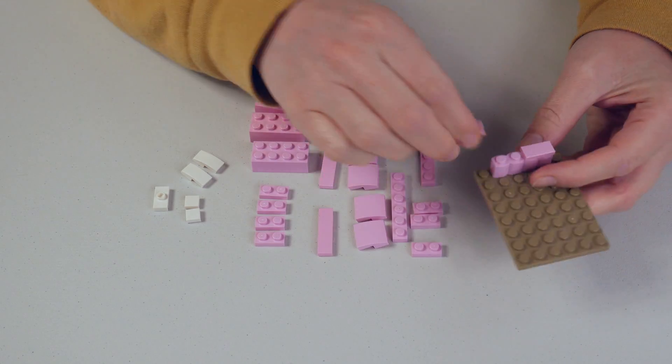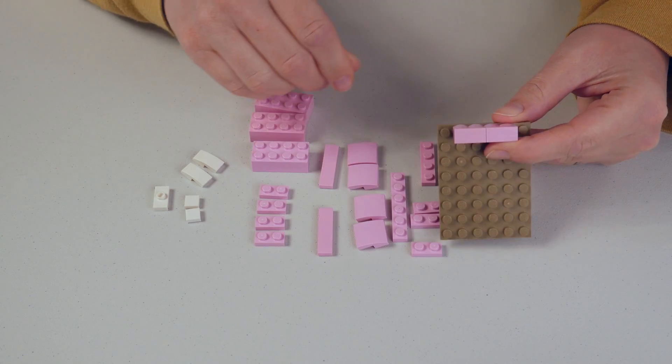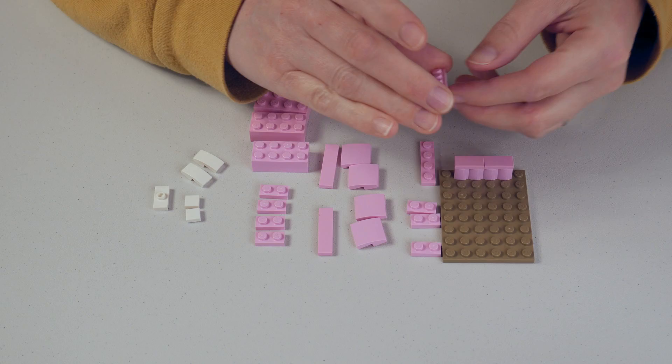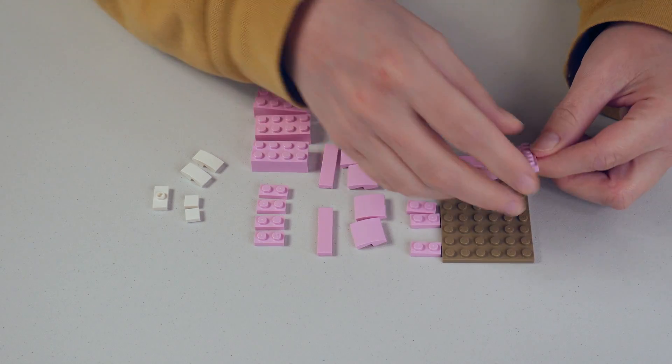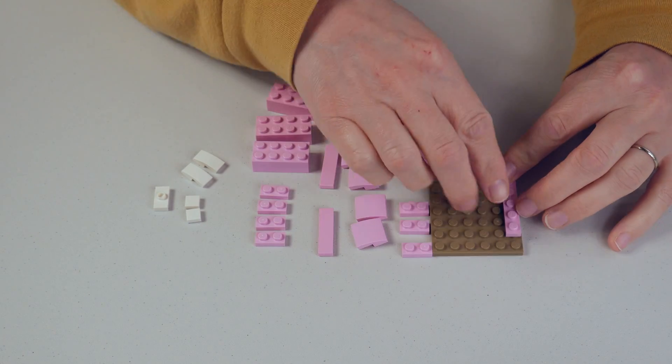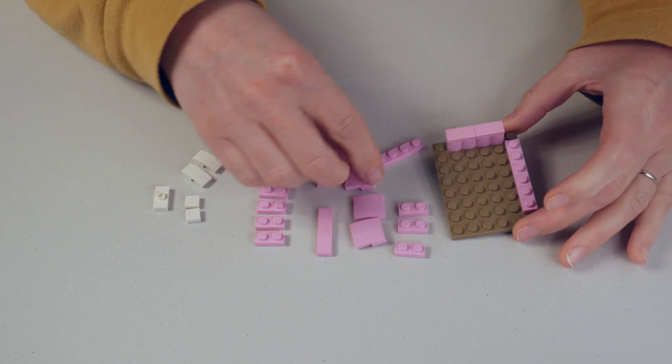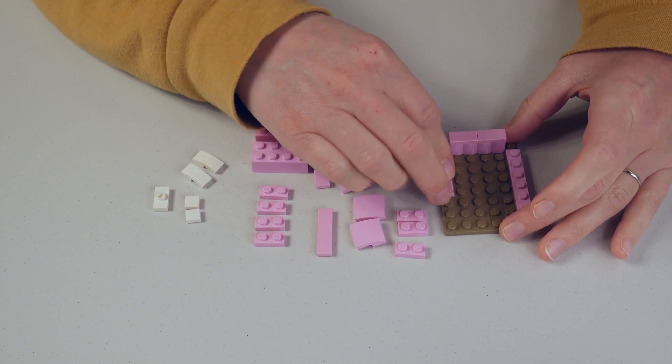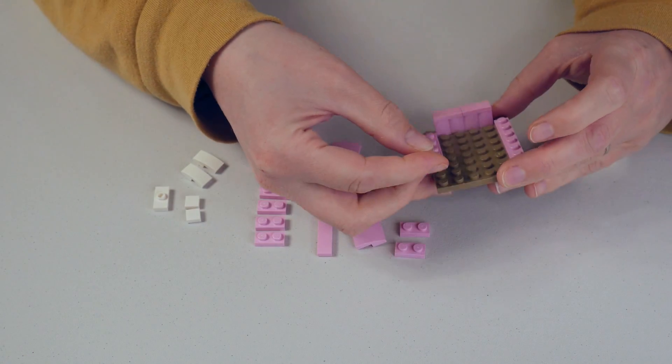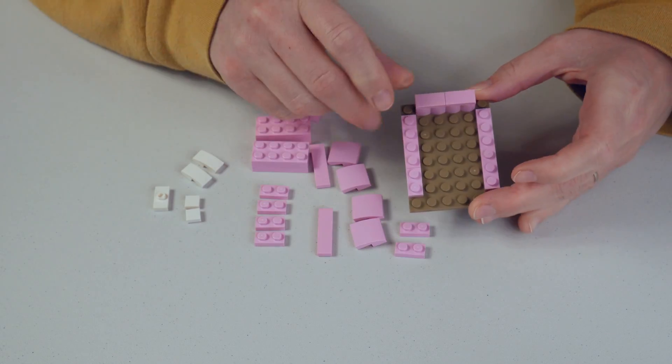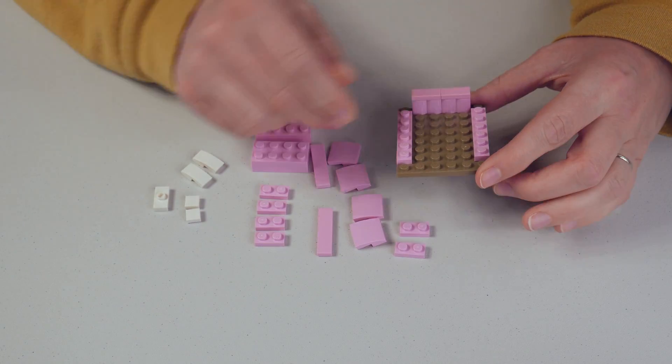Top those with flat tiles in pink and then take a one by six and put it on the side of your bed. If you don't have another one by six you can use a one by four and a one by two and that works just fine.